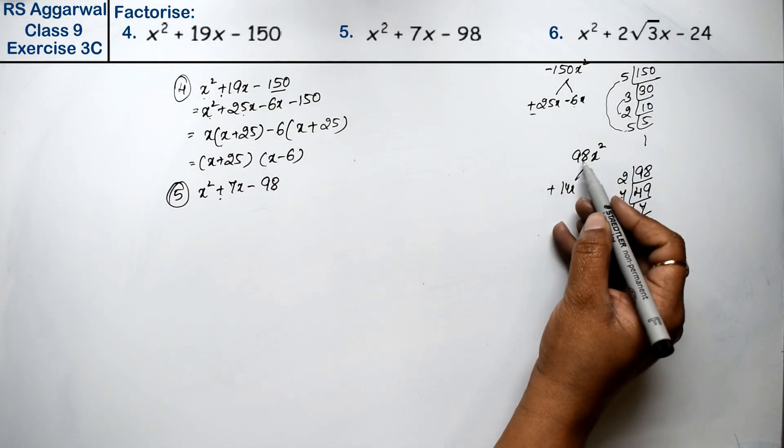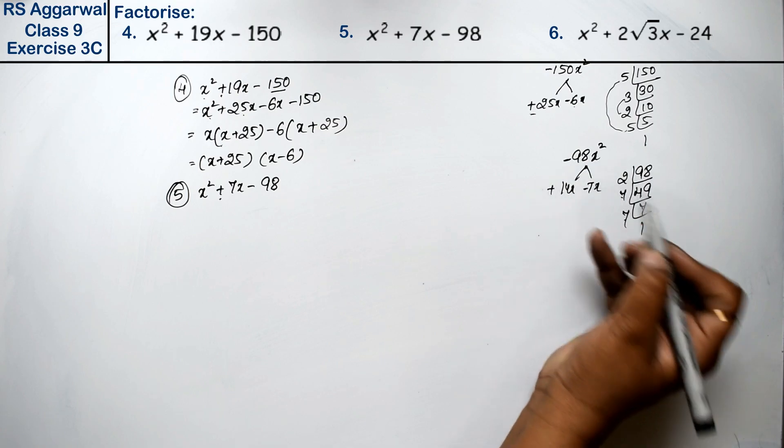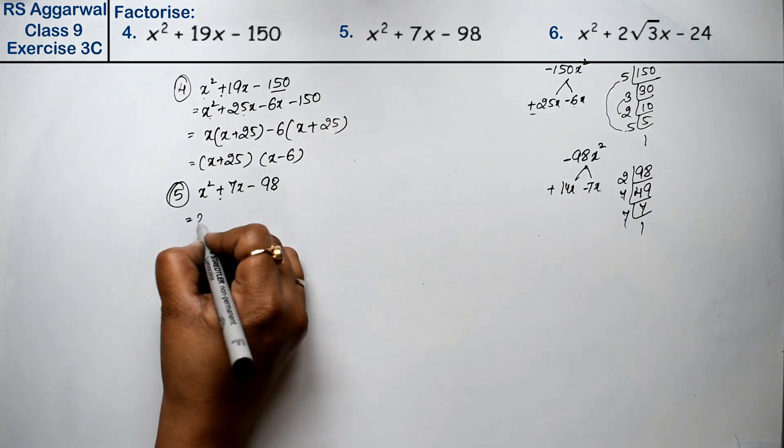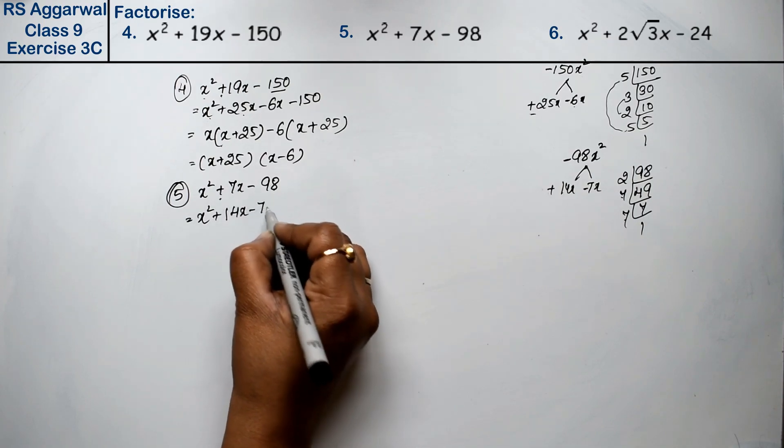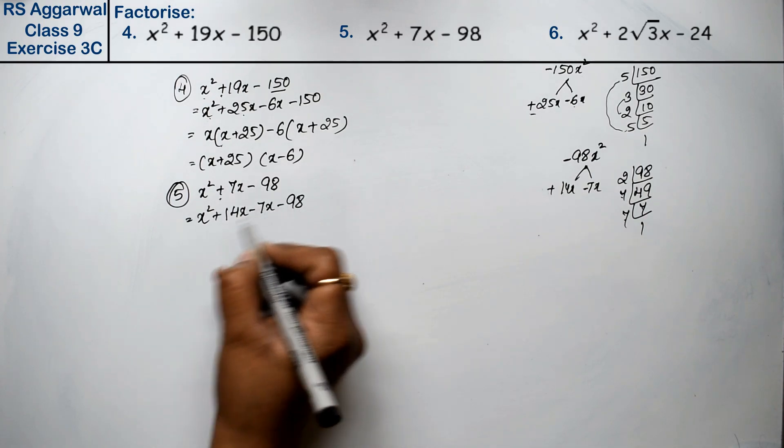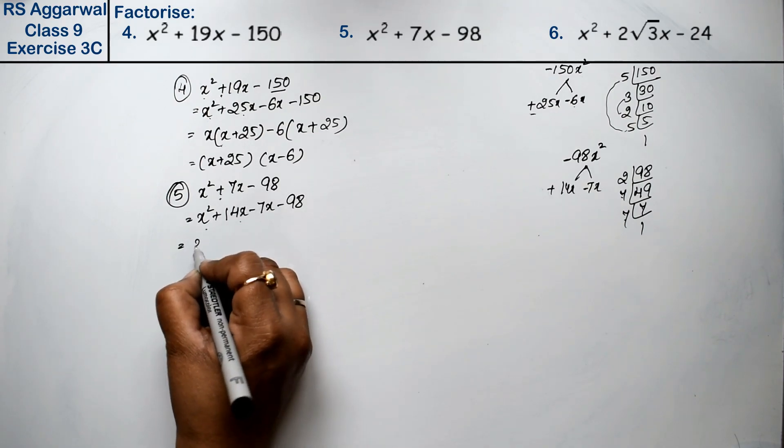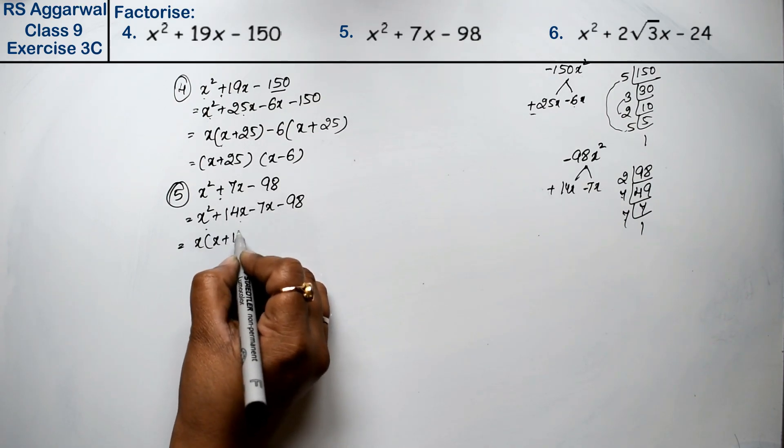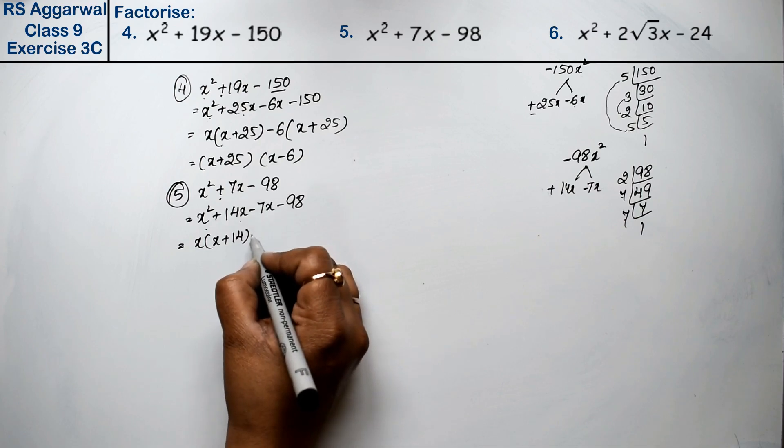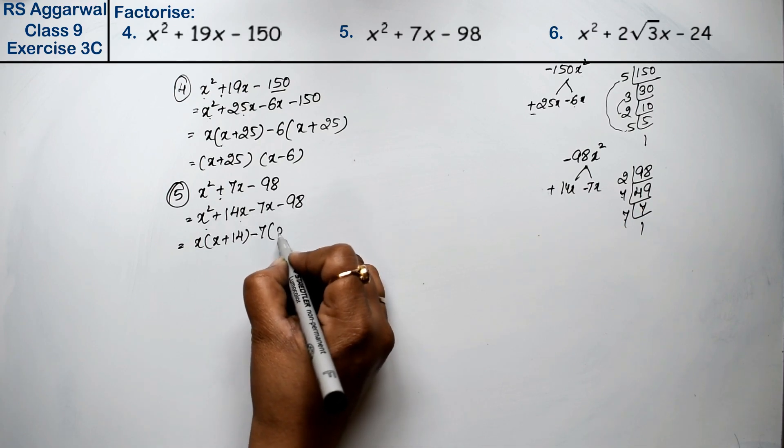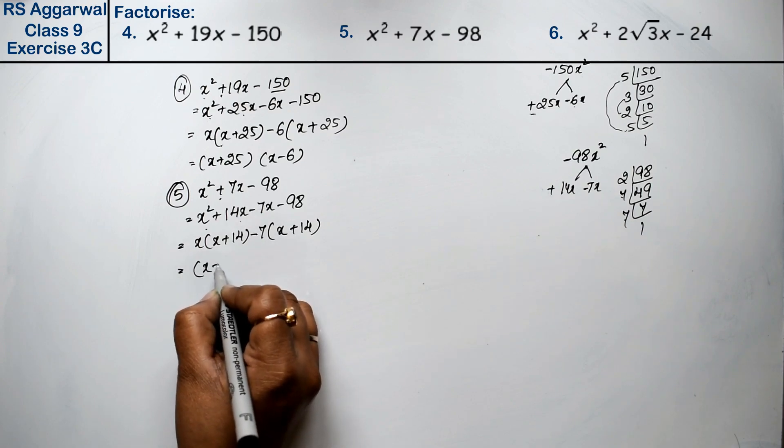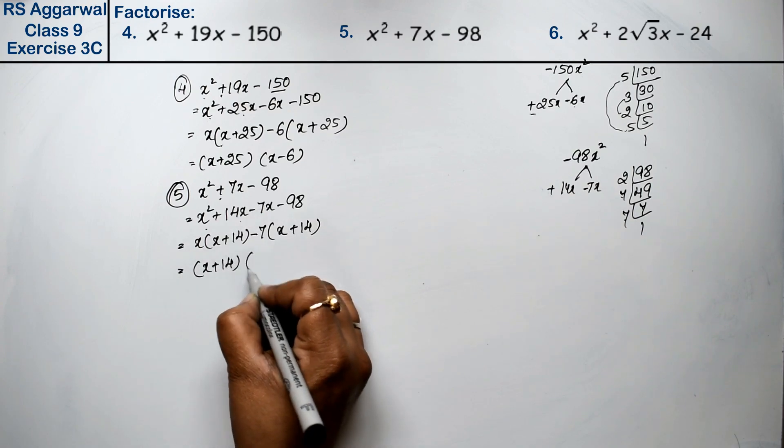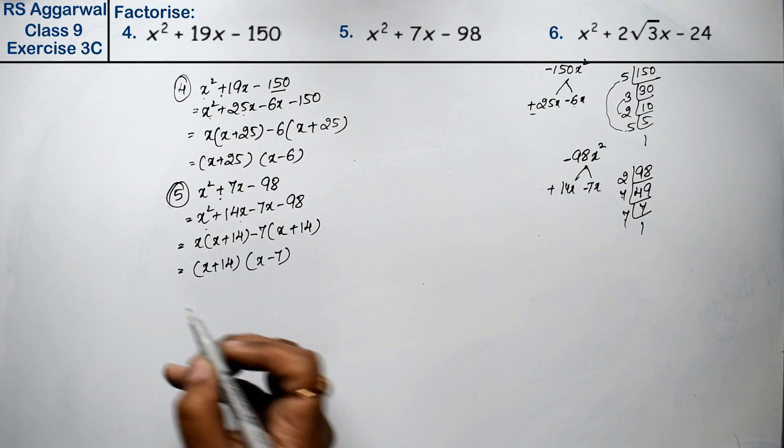From this sign, this minus sign is minus. So it's simple: x square plus 14x minus 7x minus 98. The two x is common: x plus 14. And the two minus 7 is common, so x plus 14 is produced. So x plus 14 is common. The answer is x minus 7.